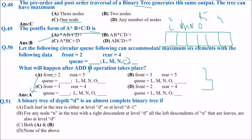A binary tree of depth D is an almost complete binary tree if: each leaf in the tree is either at level D or at level D−1, and for any node N with a right descendant at level D, all left descendants of N that are leaves are also at level D. The answer is both A and B.